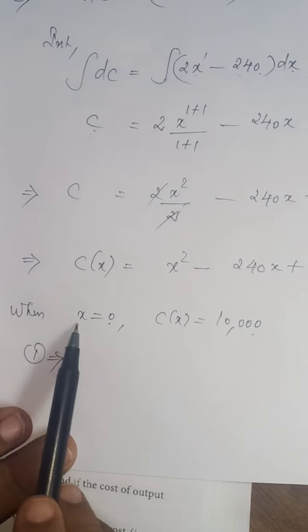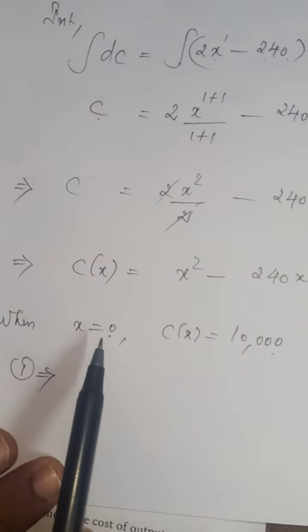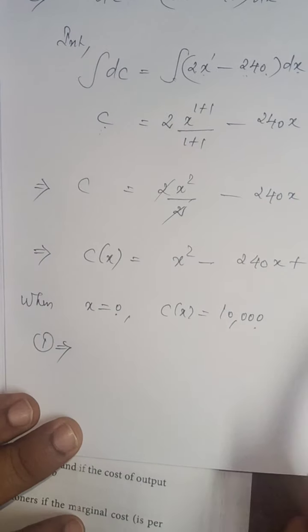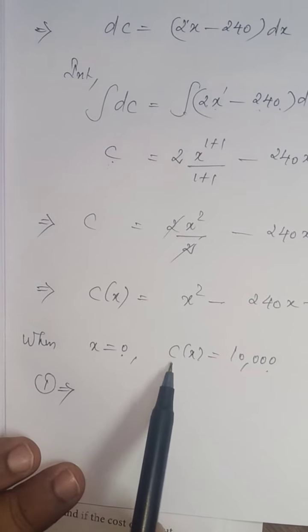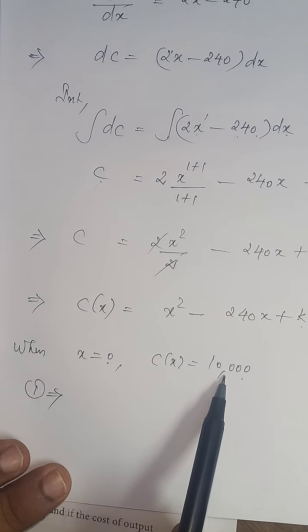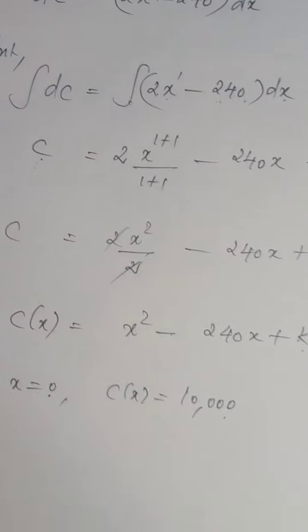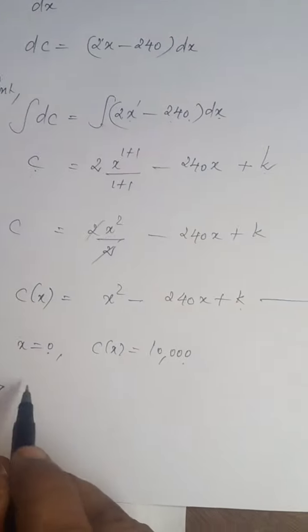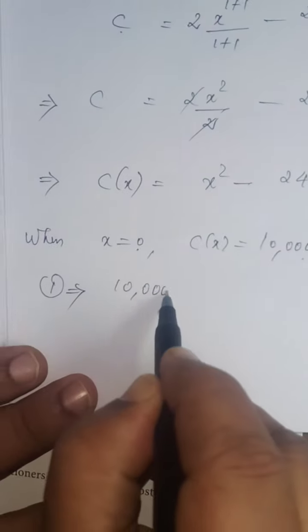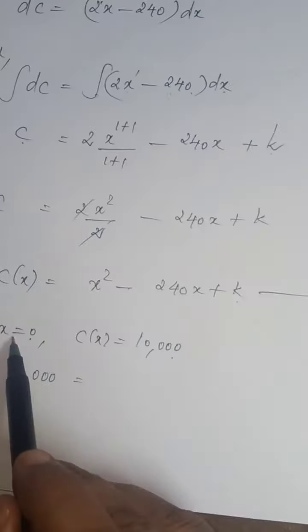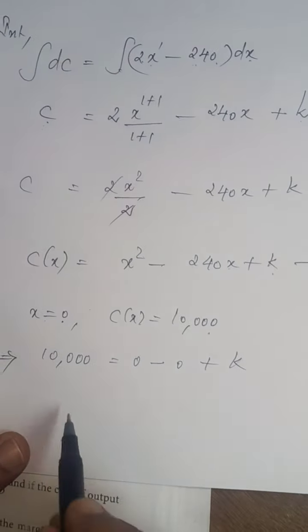So, if the engine is in static position, if it doesn't run, how much amount we have spent for overhauling? 10,000 rupees. That has to be considered. So, substitute in equation number 1. So, equation 1 implies what is in the left-hand side C of X that can be replaced by 10,000 rupees. Equals. Replace X by 0, 0 square, 0, minus 240 into 0, 0 plus K. So, K that is equal to 10,000.